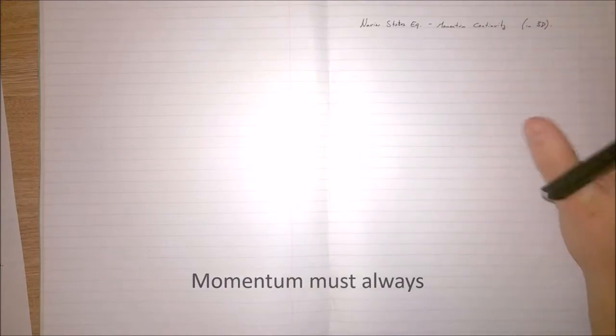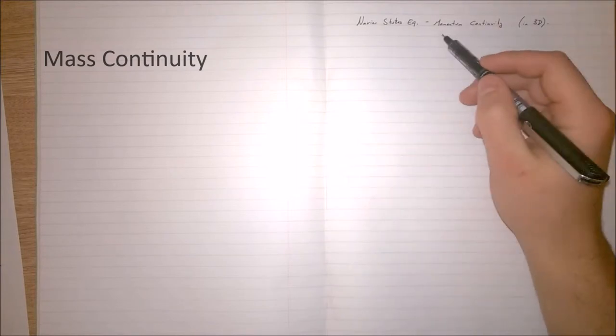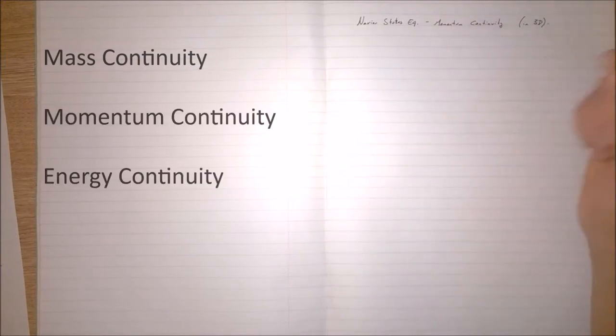Much like the mass continuity equation which we derived in a previous video, the momentum continuity basically says that momentum must always be conserved in any realistic application, especially when we're considering fluids which will have momentum. We're applying the law that momentum must always be conserved. We've got three equations: the first is the mass continuity which we've already got, the second is the momentum continuity, and the third will be the energy continuity. Between these three equations we'll be able to predict what the fluid is going to do after a certain amount of time.